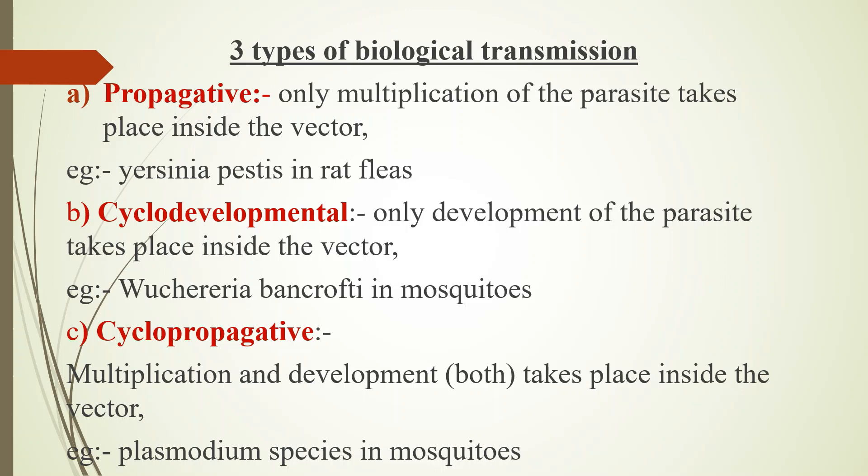Propagative means only multiplication of the parasite takes place inside the vector. Example: Yersinia pestis in rat fleas. Yersinia pestis causes plague, and the rat flea is the transmission agent.